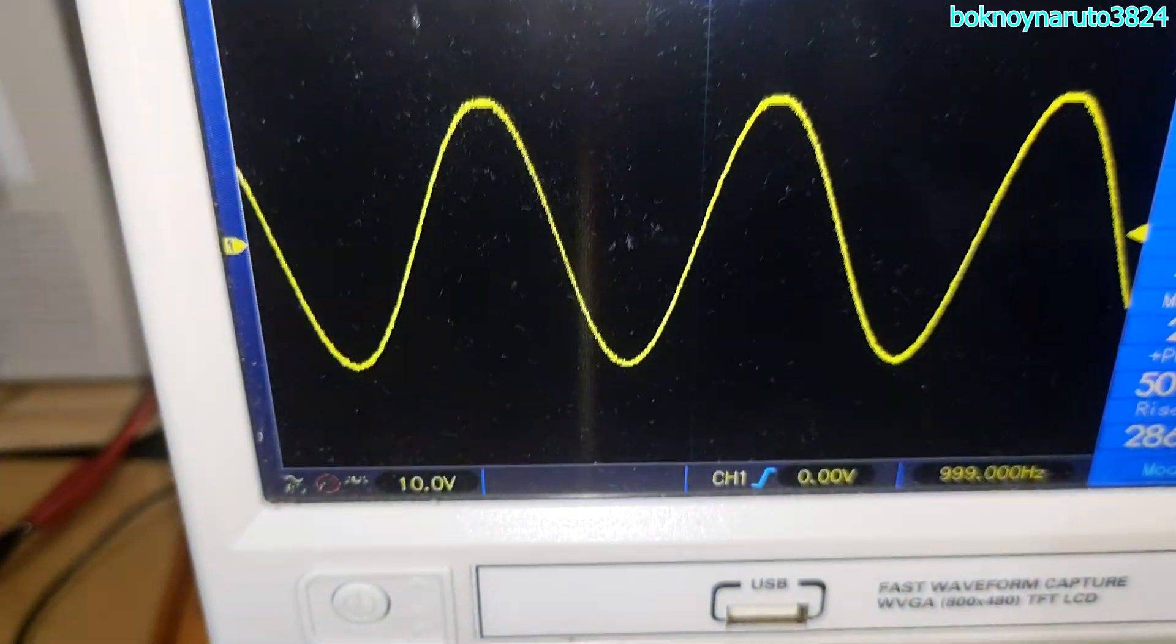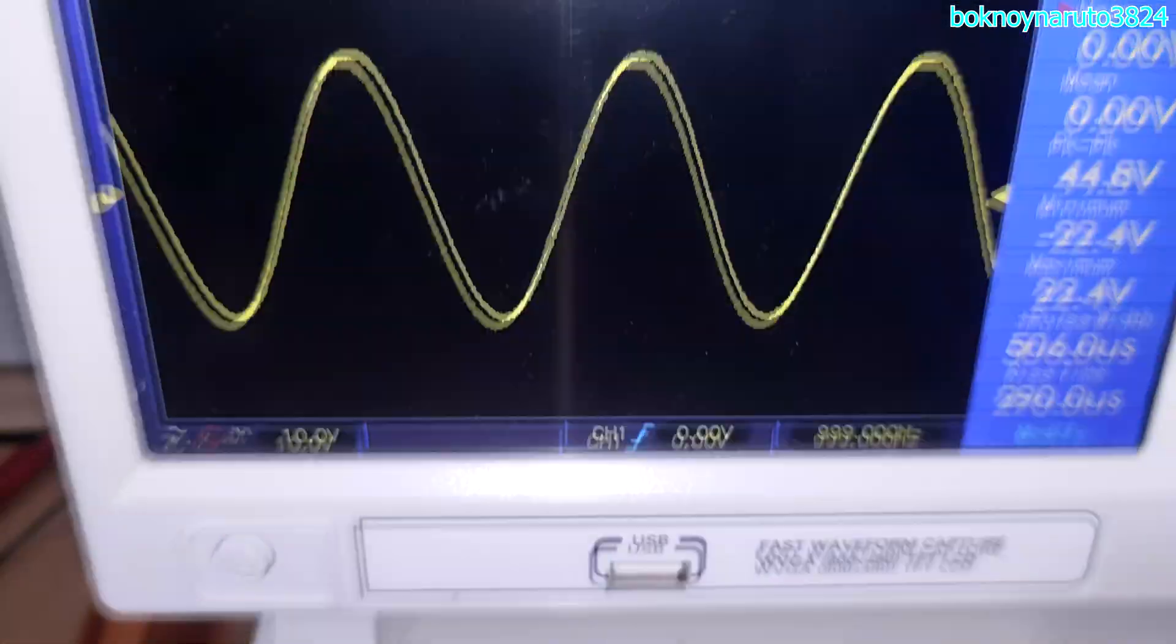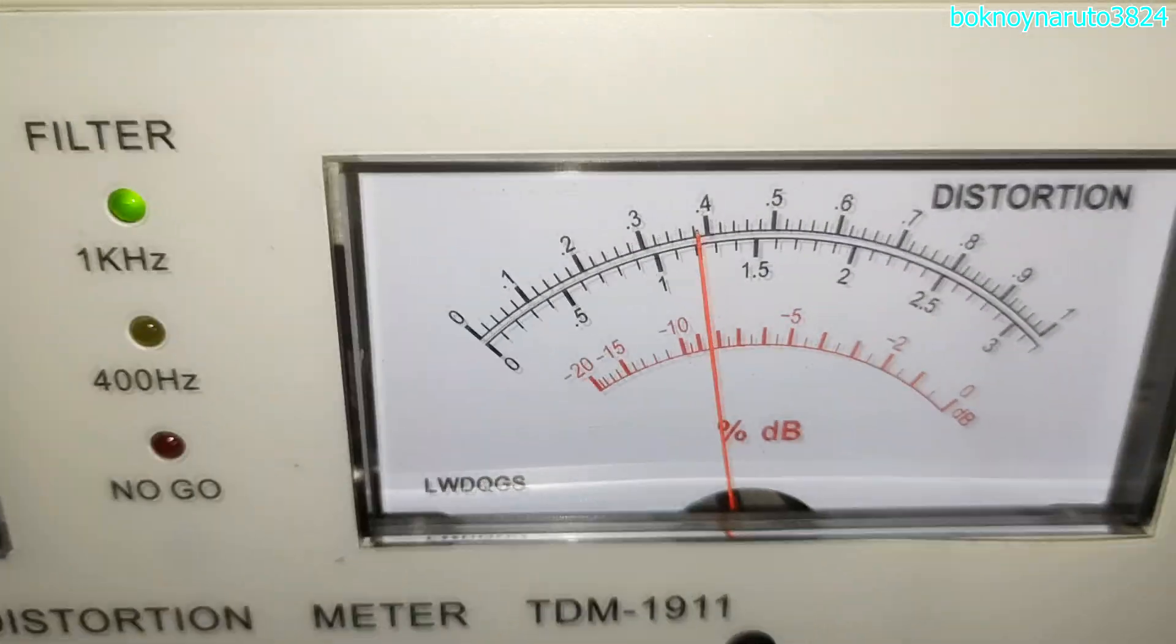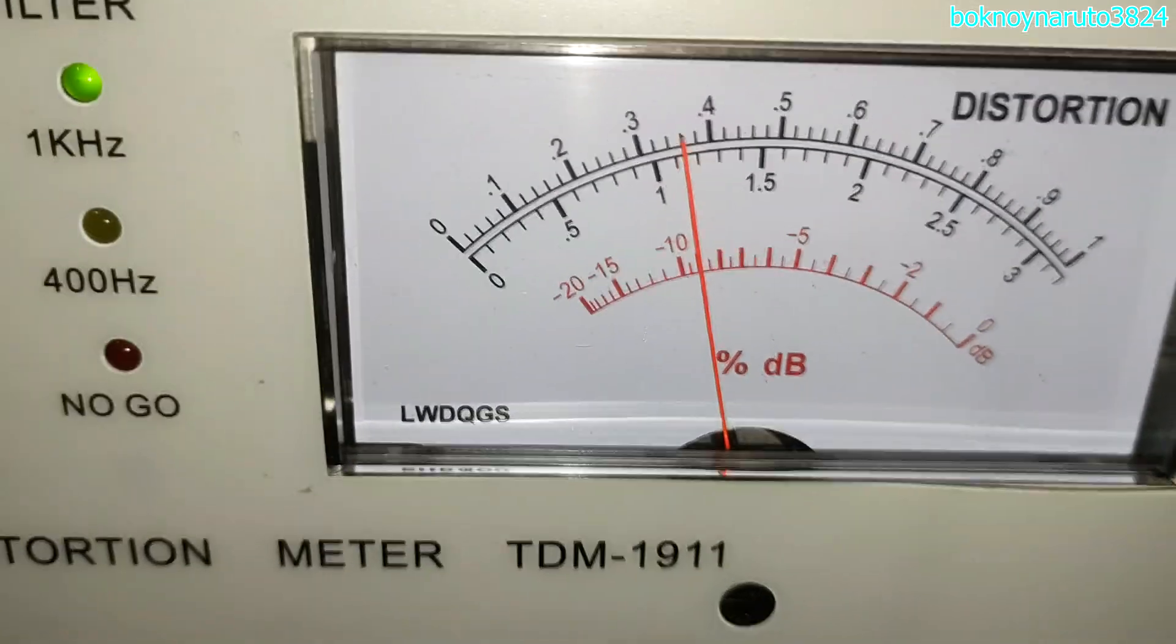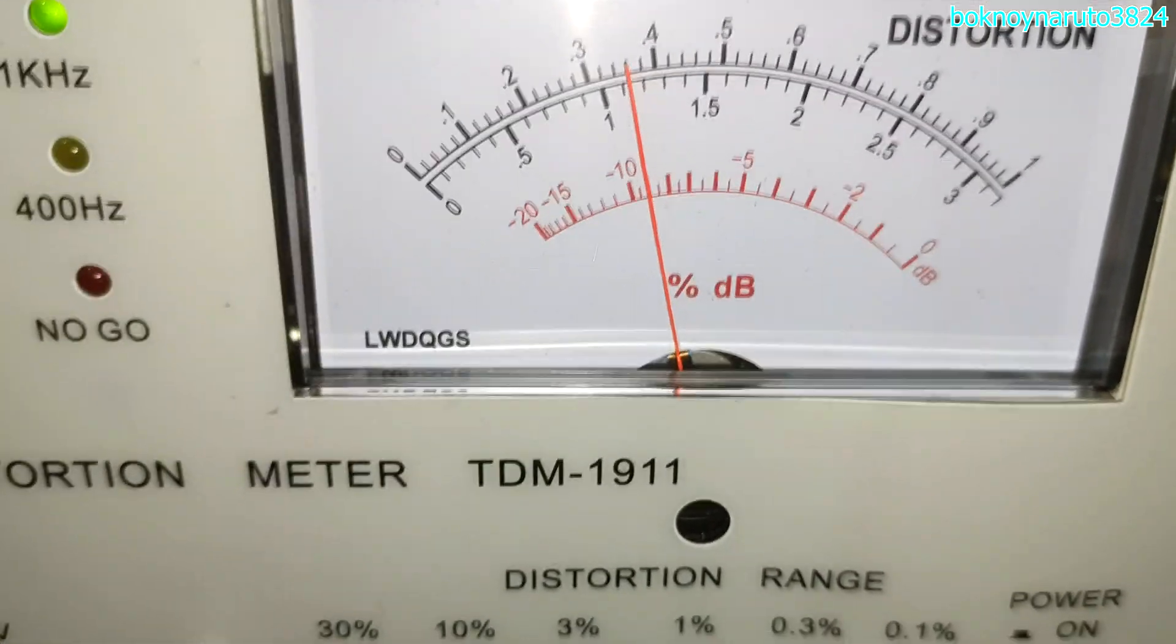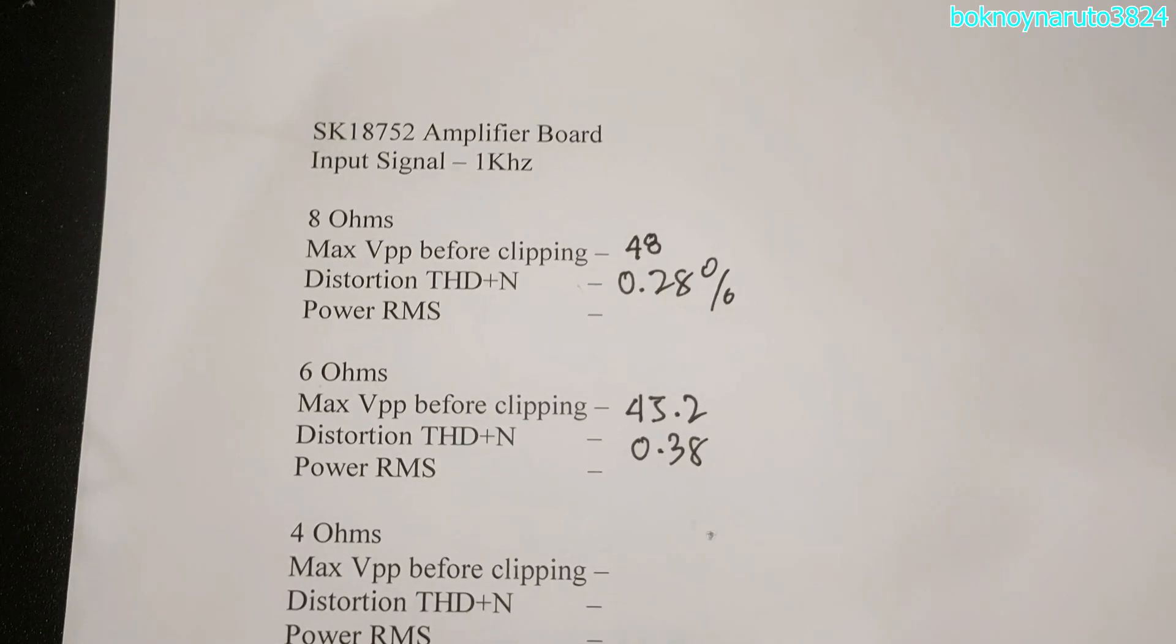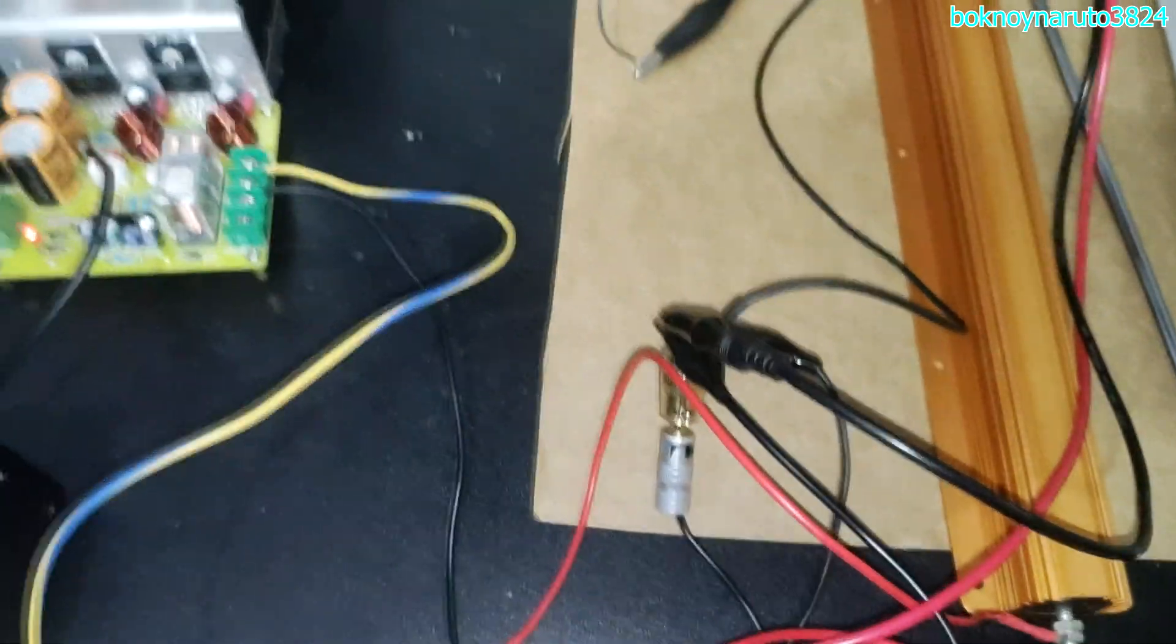Looks like that's the max output: 45.2 volts peak to peak at 6 ohms load. Now let's look at our THD. So I'll be back after I change the dummy load to 4 ohms load.